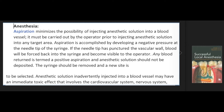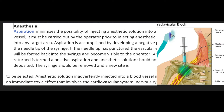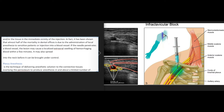Anesthetic solution inadvertently injected into a blood vessel may have an immediate toxic effect involving the cardiovascular system, nervous system, and/or the tissue in the immediate vicinity of the injection. It has been shown that almost half of the mortality in dental offices is due to the administration of local anesthesia to sensitive patients or injection into a blood vessel. If the needle penetrates a blood vessel, the lesion may cause a localized extra-oral swelling of hemorrhaging blood within a few minutes, and may also spread into the neck before it can be brought under control.